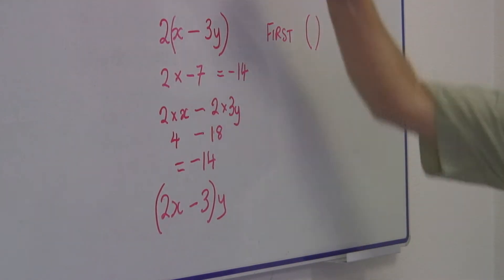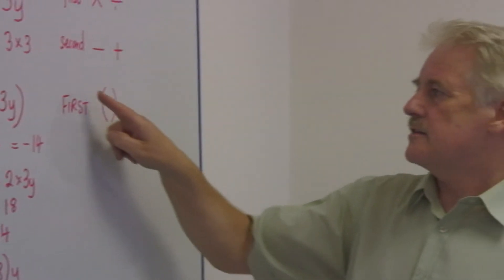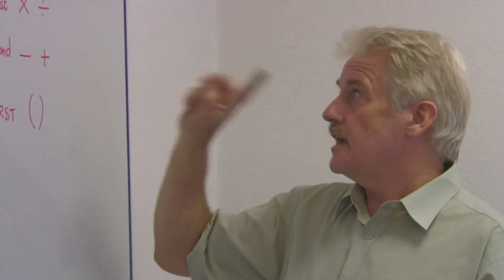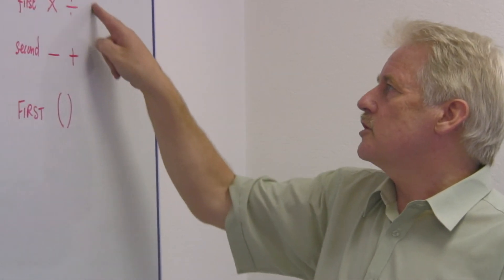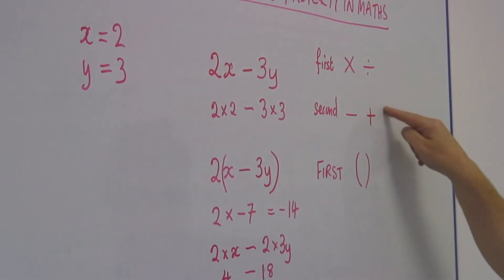So the distributive property is very important as I first of all do everything in the brackets, taking account of doing multiplications and divisions first. Second, I do subtractions and additions.